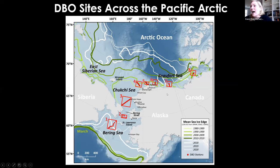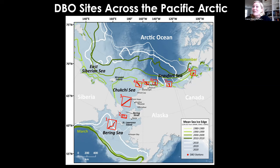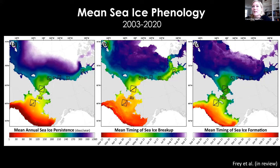I'm also plotting the mean sea ice edges in March in the south and September in the north. As you know, we had some really unique sea ice conditions in 2018 and 2019. In 2020, the March sea ice edge was back farther towards normal. On the left are mean sea ice concentrations by month, and on the right are mean sea surface temperatures. There's incredible seasonality across the region in both physical and biological characteristics that we can measure by satellite.